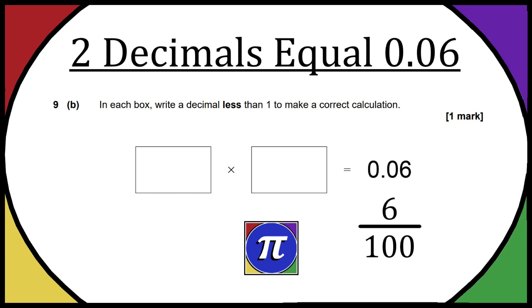Then from there, I was like, okay, well, what's going to be on the top to make 6? Well, we can do 3 times 2. And on the bottom, we can do 10 times 10 because that equals 100.